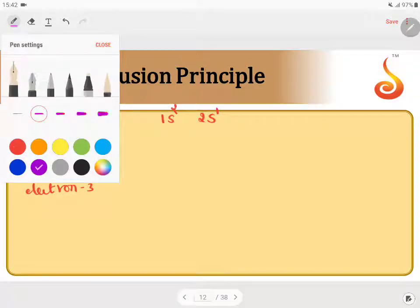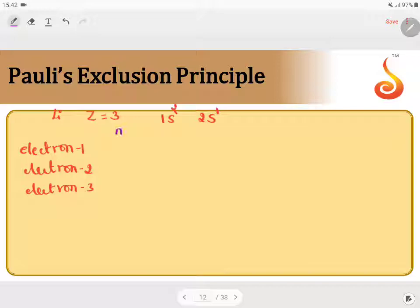Let us find out what are the N, L, ML and MS values for this. That is principal, azimuthal, magnetic and spin quantum number.